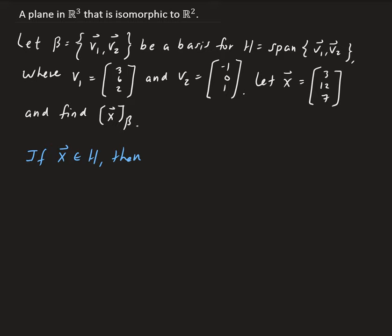that means X can be written as a linear combination of V₁ and V₂. So we have that X can be equal to C₁ times V₁ plus C₂ times V₂.